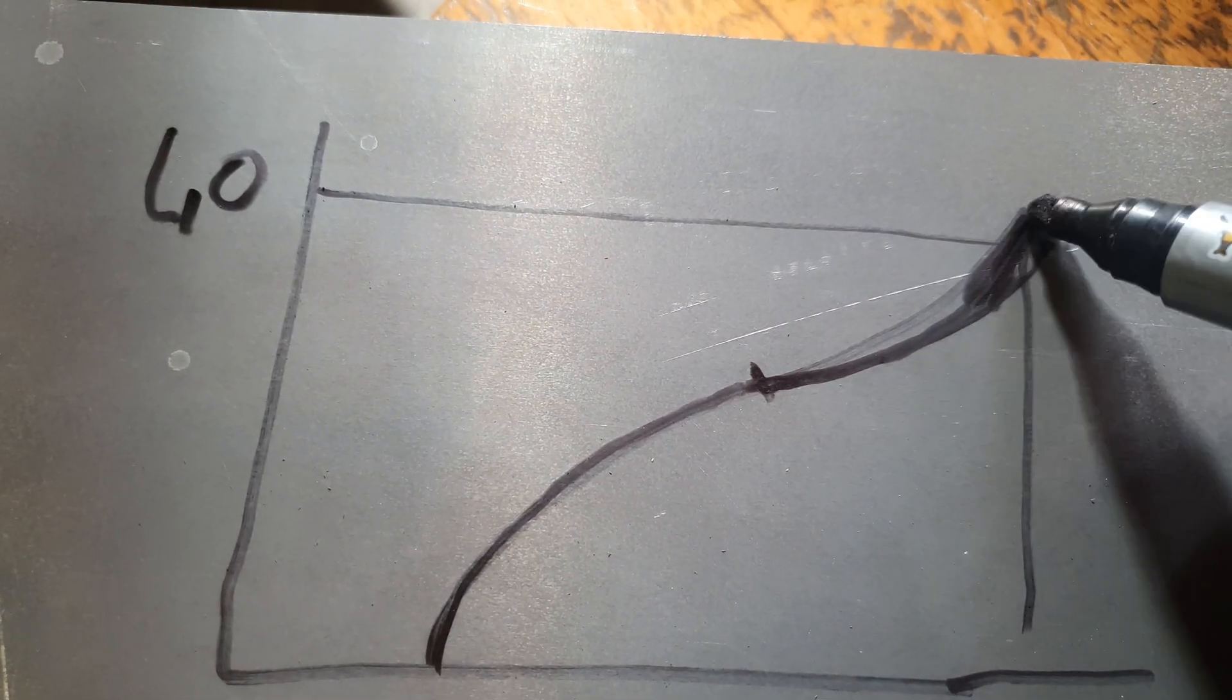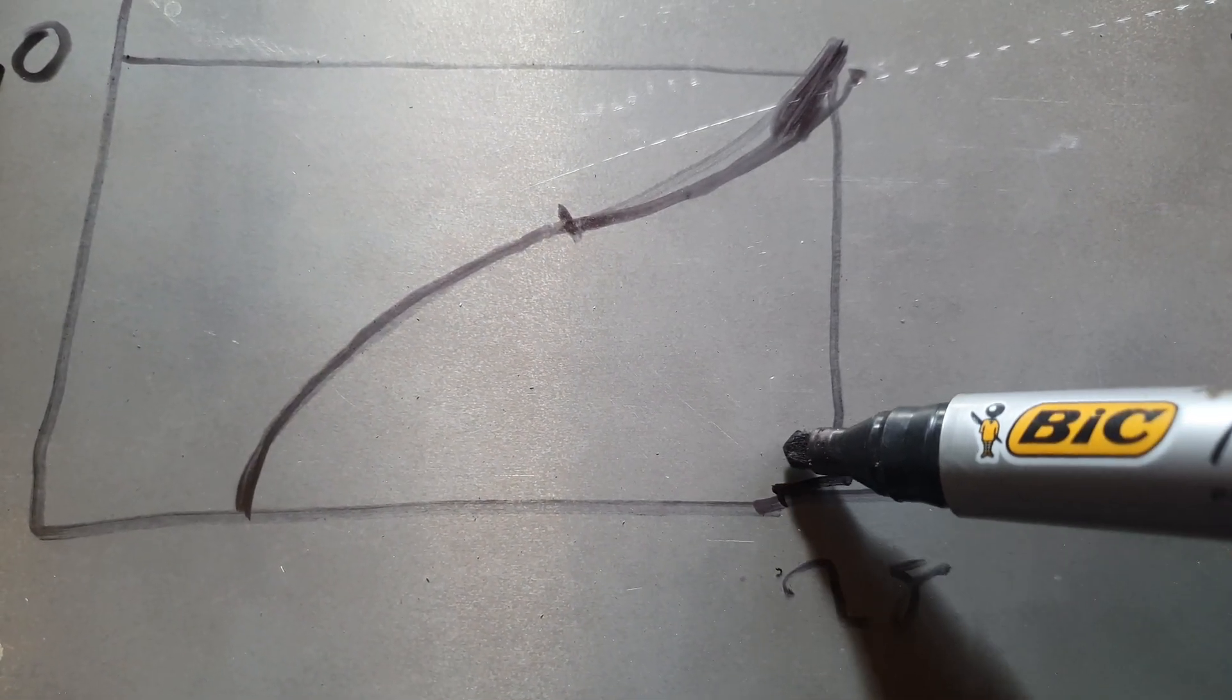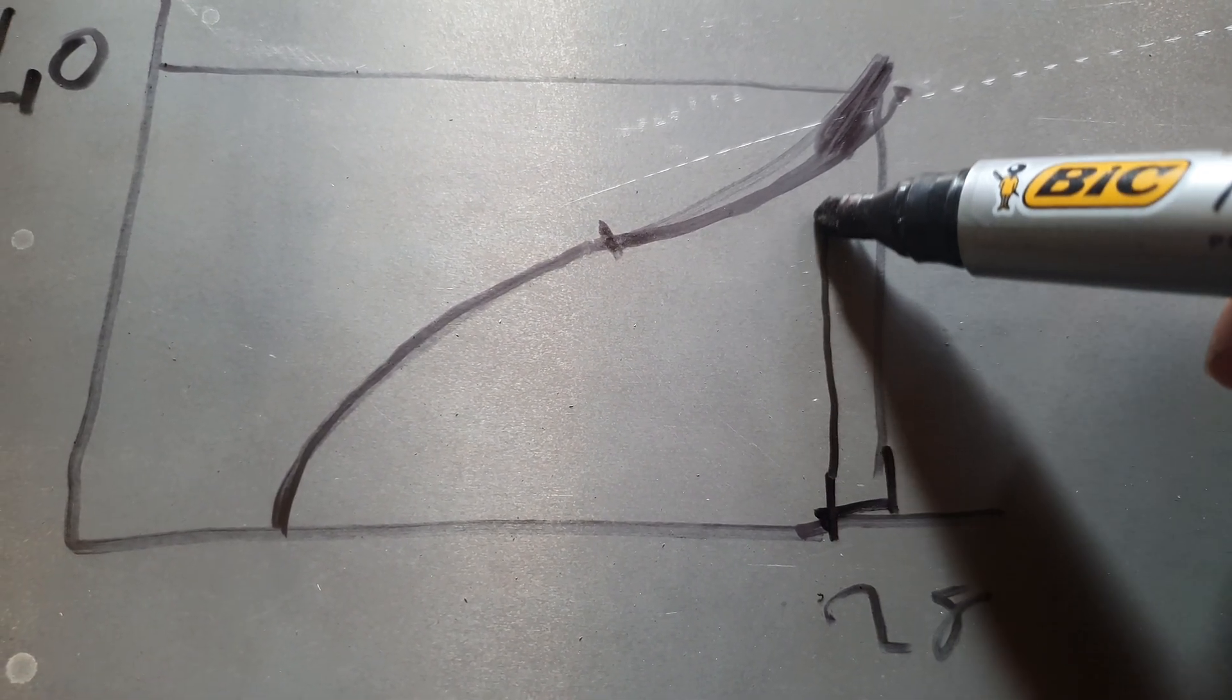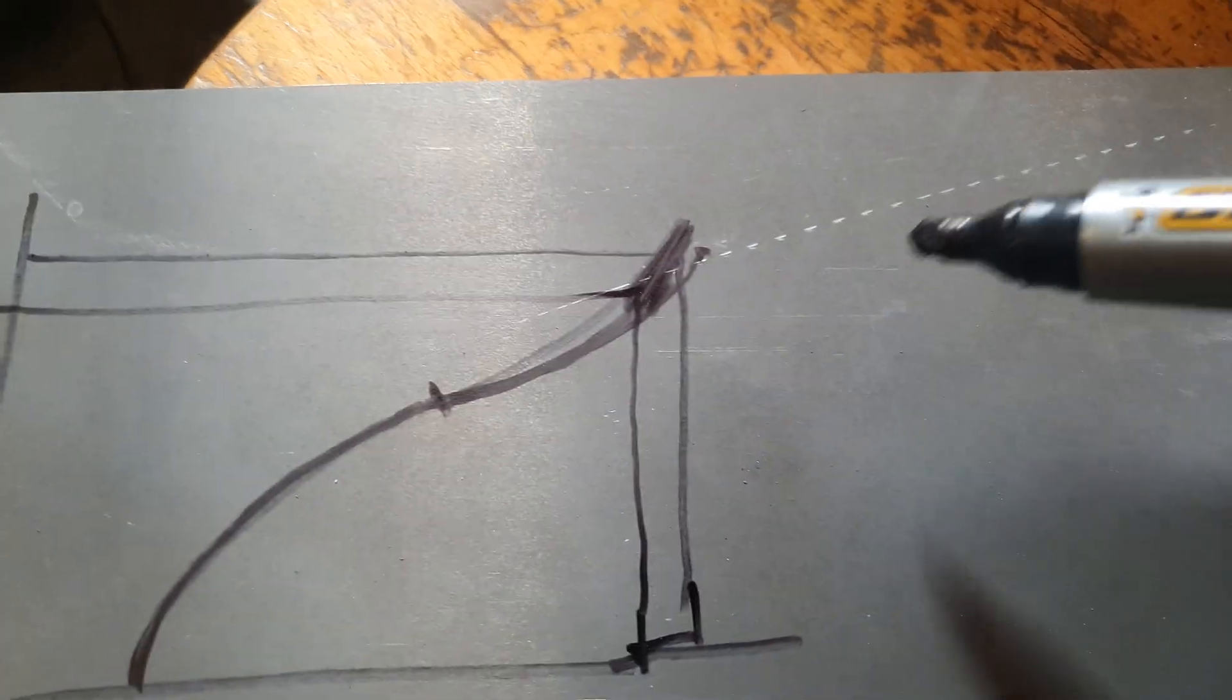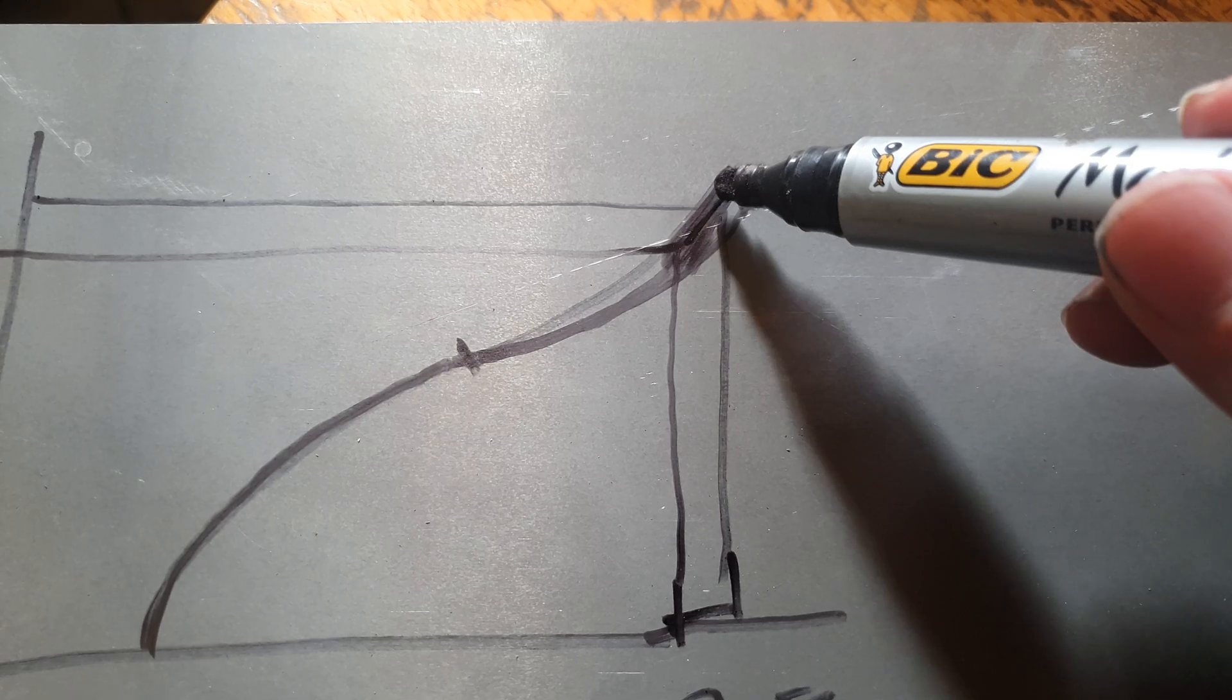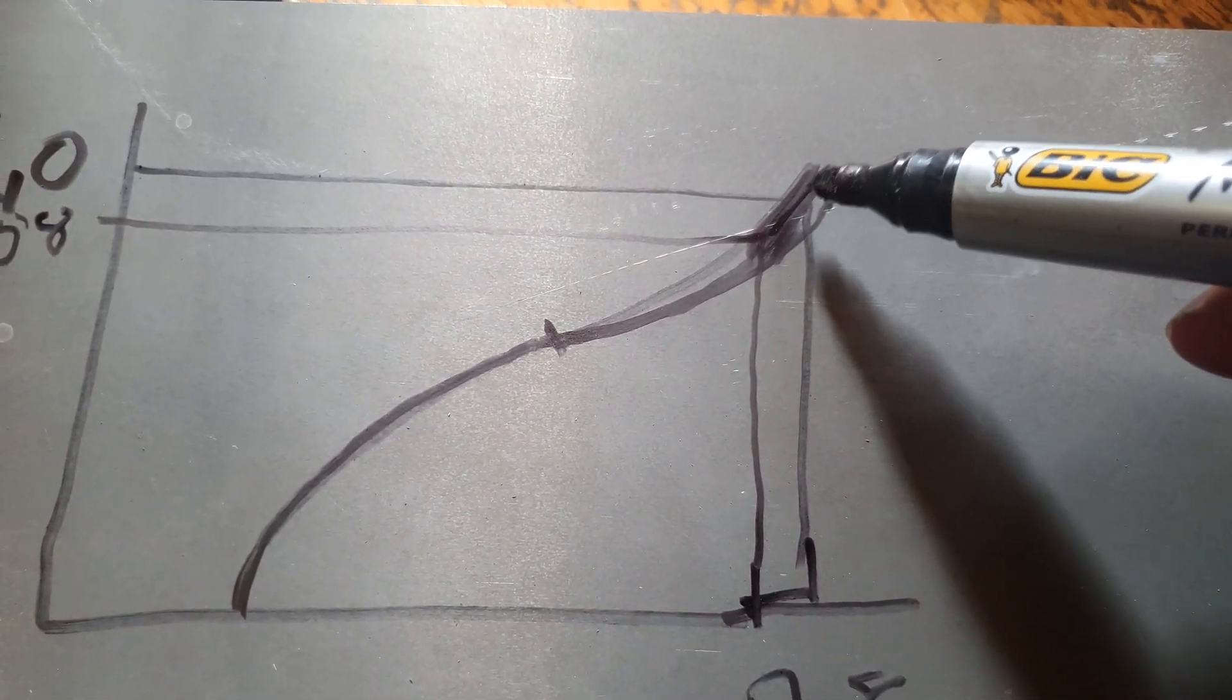So a normal limb with that angle there, over 1 inch it'll go from 38 up to 40. So it'll gain 2 pounds.